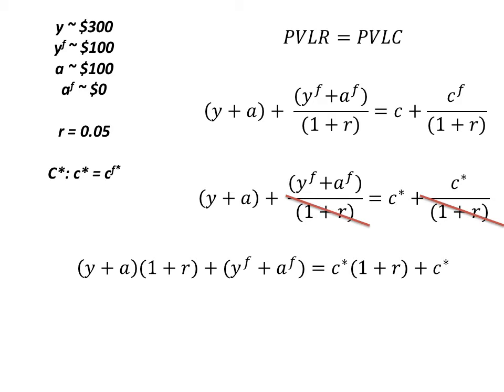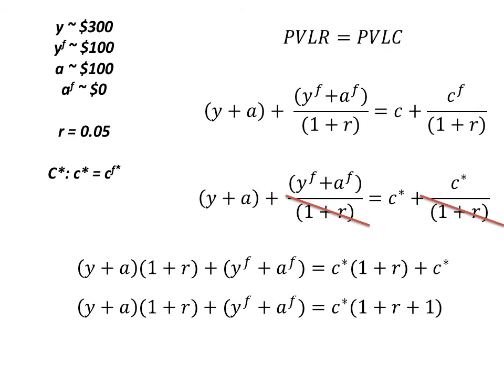Anytime during this video you feel you need to stop, pause, take some notes, do the algebra out, please do that — I strongly encourage it. Our next step is simply working with the right side of the equation: we are going to factor out the C*, so the left side stays the same. On the right side we take (1+r) and the 1 out, giving us C* times (1+r+1).